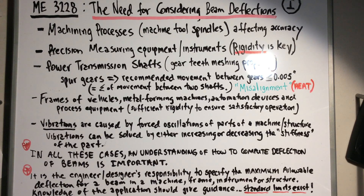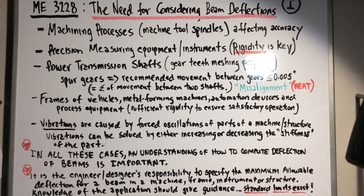In your solids class, most of the time you were designing for structural stress applications — trying to find what the maximum stress was so you could compare it to some material's value of that same property. It was always usually a strength application: designing for sigma max, for either plastic or elastic deformation. Usually on structural applications we design up to the elastic stress limit, designing for strength categories.